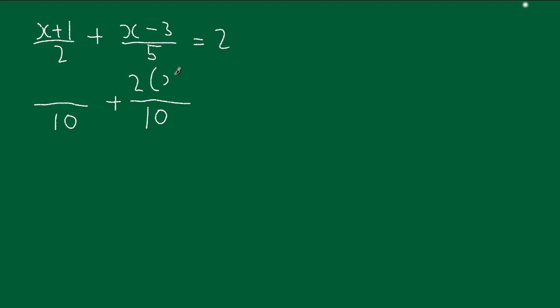Put the x minus 3 in a bracket like this. And we've multiplied the 2 by the 5, so we've got to put the 5 up here. And of course all of that equals 2.